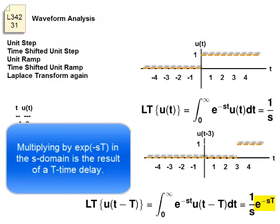Multiplying by e to the minus st in the s domain is the result of a time delay of capital T.